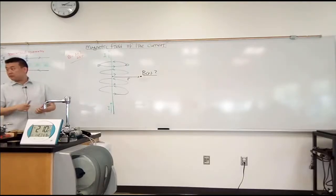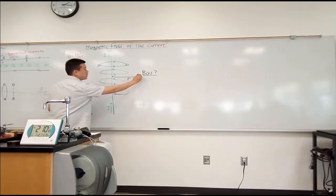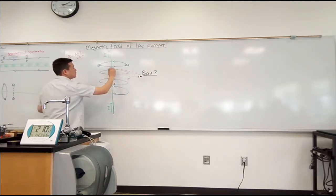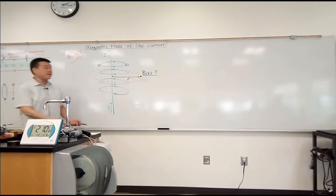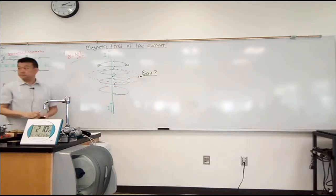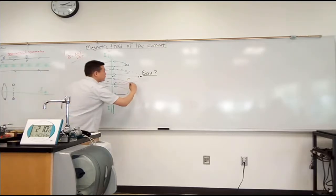So the path I'm going to pick is the circular path that goes through that point, so that the value of B I figure out has something to do with this point. Any questions? So this is my Amperian loop.